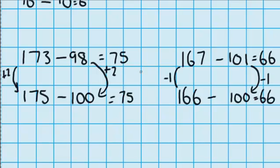Now let's look at what we've been doing in this lesson. In the first question we made both numbers two bigger, so we kept the gap the same. In the second question we made both numbers one smaller, so we still kept the gap the same. The key to this lesson is that you're doing the same thing to both numbers, so you end up with a question that's easier to answer, but where the distance between the two numbers is exactly the same as when you started.